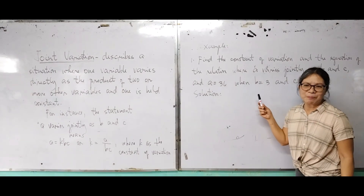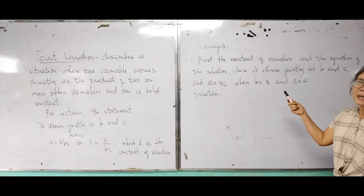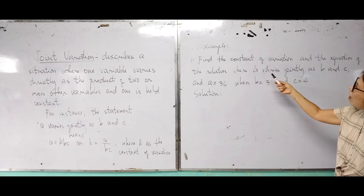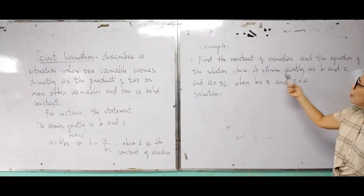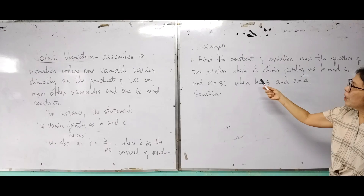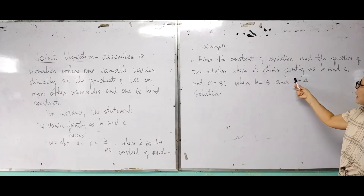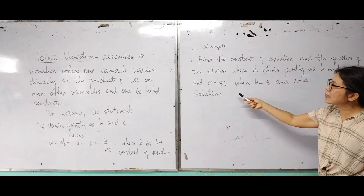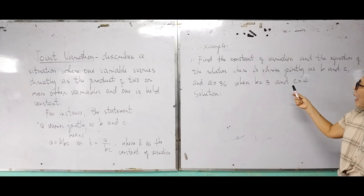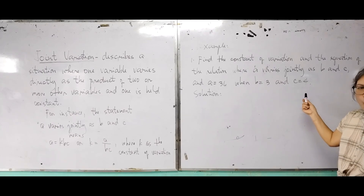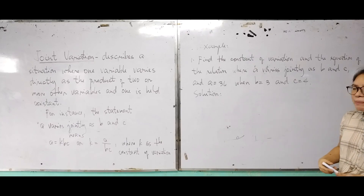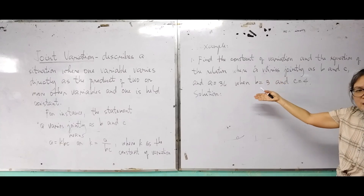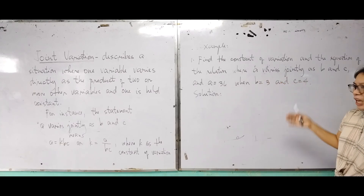Let's now go to examples. First example: find the constant of variation and the equation of the relation where A varies jointly as B and C, and A equals 36 when B equals 3 and C equals 4. Solution: first, we're going to translate the statement into a mathematical equation.